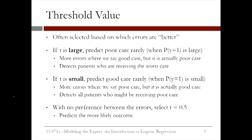There are two types of errors that a model can make: ones where you predict 1, or poor care, but the actual outcome is 0; and ones where you predict 0, or good care, but the actual outcome is 1. If we pick a large threshold value t, then we will predict poor care rarely, since the probability of poor care has to be really large to be greater than the threshold. This means that we will make more errors where we say good care, but it's actually poor care.